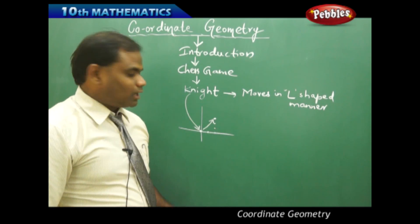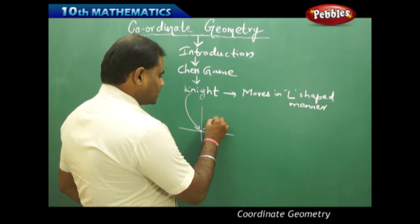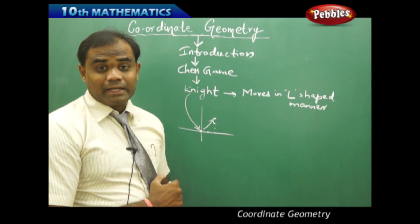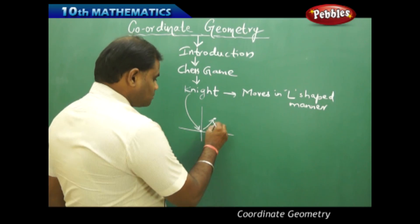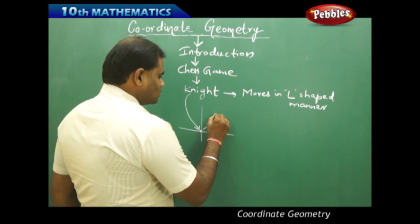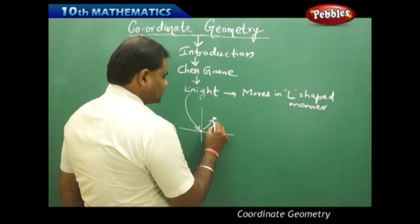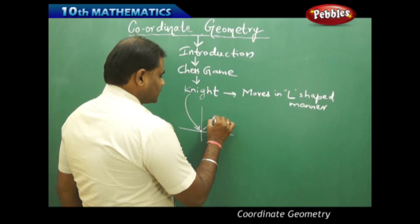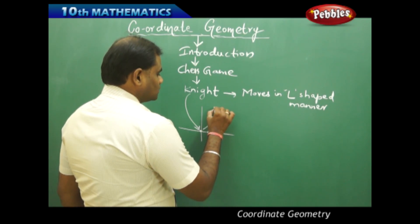Now I wanted to know the position of the knight after moving in an L-shape manner. So what is the position of this? Again from here, this moves in L-shape manner through which I get one, two, one, two, three.